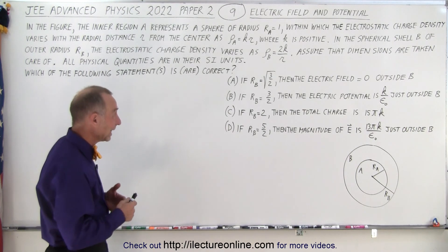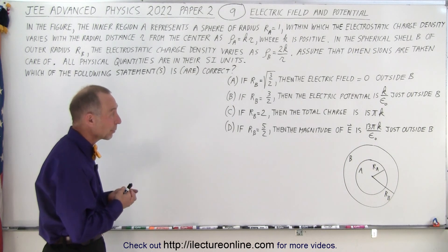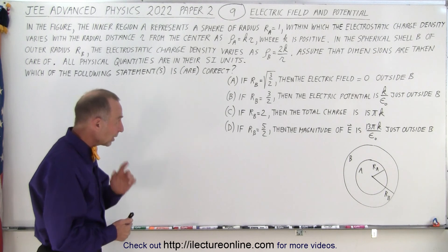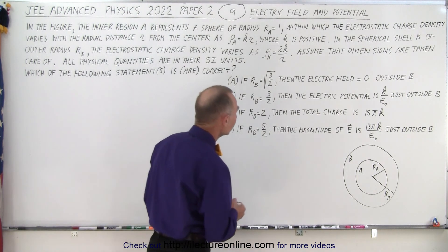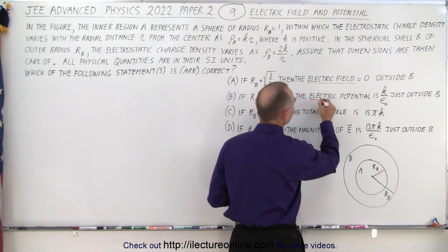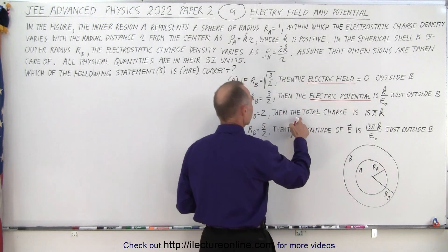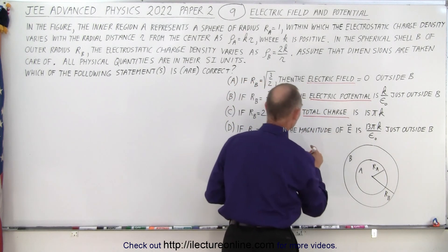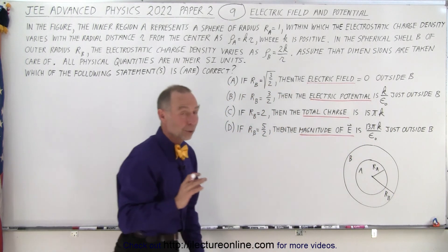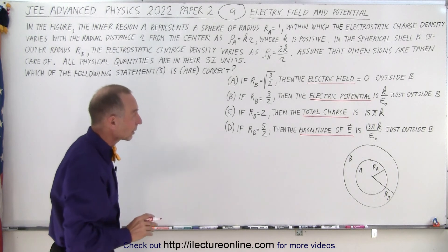So they gave us four statements and any one of the four can be correct up to maybe all four. Now one thing we need to be careful of is that here they're talking about the electric field. Here they talk about the electric potential. Here they talk about the total charge. And here the magnitude of the electric field.